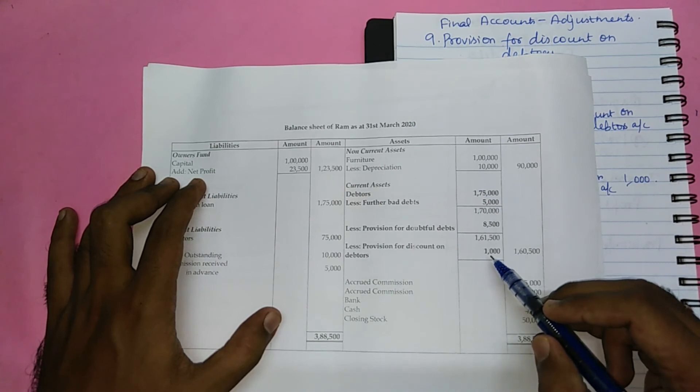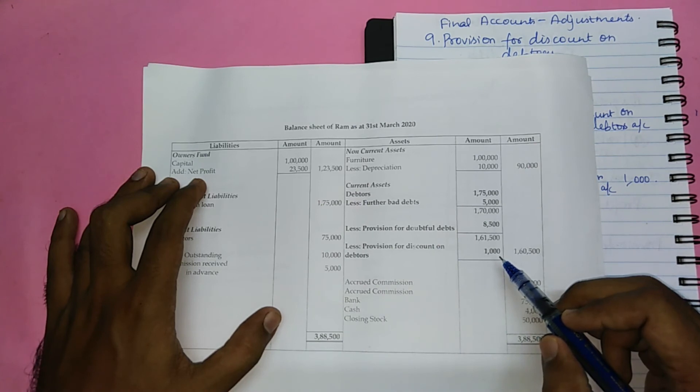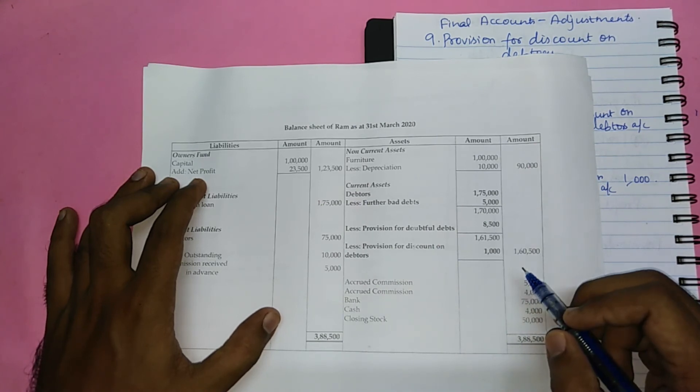In the balance sheet, we show provision for discount on debtors as a deduction from debtors to show the expected realizable value of debtors. In the subsequent year, the discount allowed will be adjusted with the provision created only.